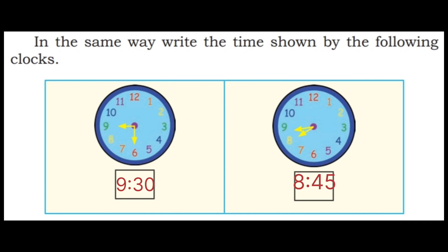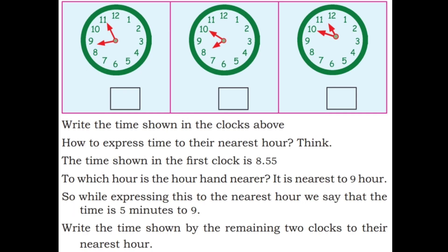Now you have to observe the time of needles. Write the time shown in the clocks above. Small needle between 8 and 9, big needle at 11, so that is 8:55. Second one: small needle at 8, big needle at 10, so 8:50. Third one: small needle at 11, big needle at 10, so 11:55.